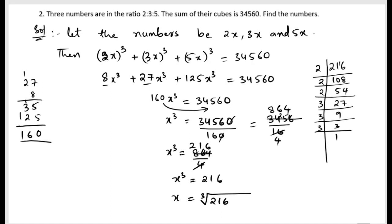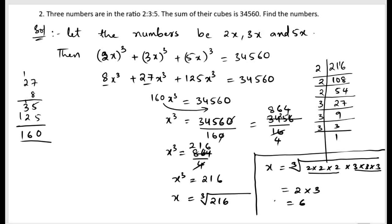So how many 2s and how many 3s? Three 2s and three 3s. x equals cube root of 2 into 2 into 2 into 3 into 3 into 3. For these three 2s and for these three 3s, we can write single, that means 2 into 3. So 2 times 3 equals 6.